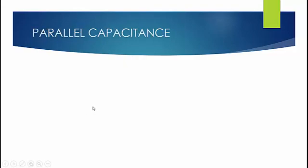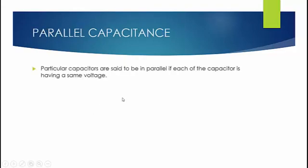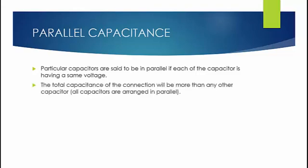Starting up with the parallel capacitance, a particular set of capacitors are set to be in parallel arrangement when the same voltage is taken up by all the capacitors. A point noted here is that total capacitance of the connection will be more than any other capacitor in the arrangement. And the formula for the parallel arrangement is C_equivalent = C1 + C2 + ... + Cn.